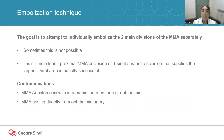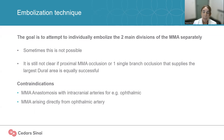Regarding the embolization technique, the goal is to embolize the two main divisions of the middle meningeal artery separately — approaching the frontal and the parietal branch individually. Sometimes this is not possible, and in these cases it is not clear whether proximal MMA occlusion or even single branch occlusion supplying the majority of the dura is equally successful. There are some contraindications for this procedure that are very important to know.